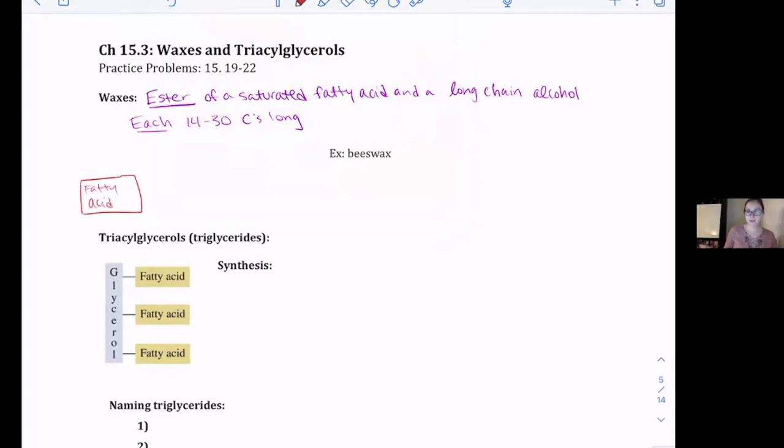Which then, so the end of the fatty acid has that carboxylic acid, right? That is going to do an esterification reaction with an alcohol. So I'm going to have our alcohol and our fatty acid come together, make an ester.